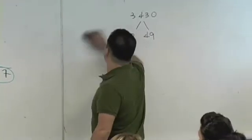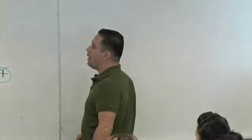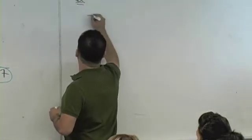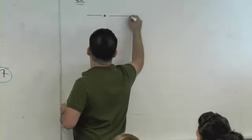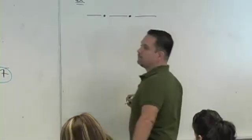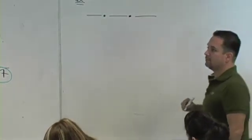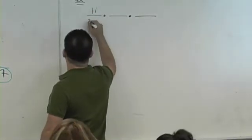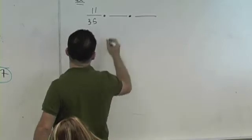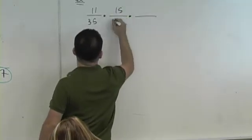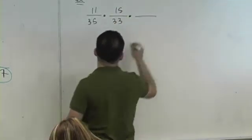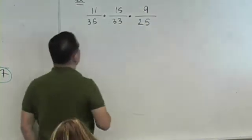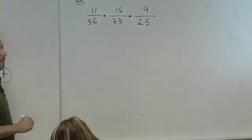This idea can be extended not just to multiplying two fractions together. You can multiply three fractions. You could multiply something like 11 over 35, 15 over 33, 9 over 25.